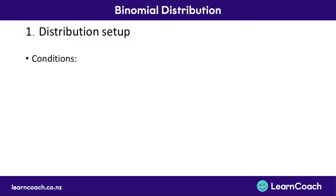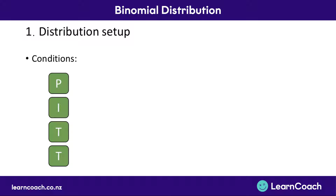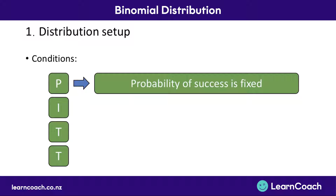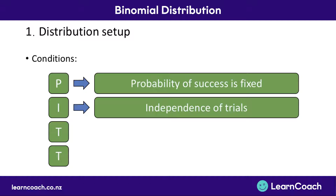There are some really important conditions on when we're actually allowed to use a binomial distribution. We can remember those conditions by using the acronym PITT — P-I-T-T. P stands for the fact that the probability of success is fixed, meaning the probability of a trial being successful has to be the same for every single trial. I stands for independence of trials, meaning the result of one trial has to be completely independent from all the other trial results.